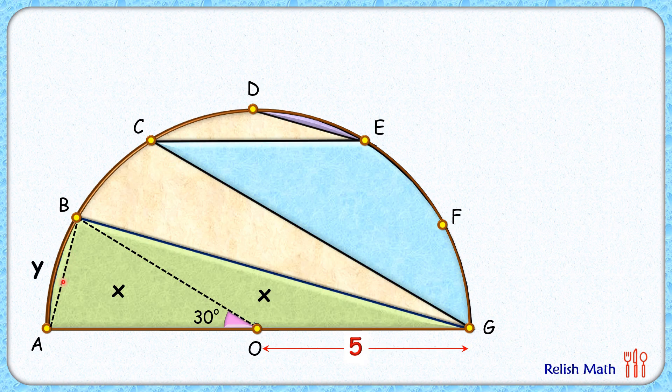So if this segment area is y centimeter square, then the area of this purple segment will also be y centimeter square. Now the total shaded area which we have to find is nothing but green area plus blue area plus this purple area.